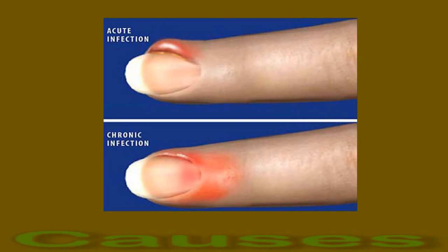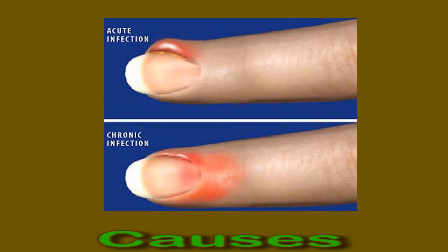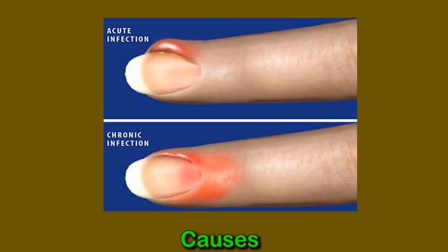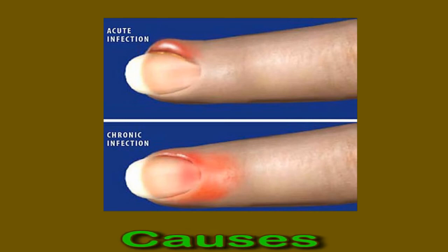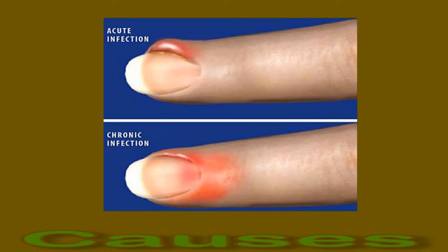The infection occurs when the skin around the nail becomes damaged, allowing germs to enter. Common bacterial culprits are Staphylococcus aureus and Streptococcus pyogenes. Common causes of skin damage around the nail include biting or chewing the nails, clipping the nails too short, manicures, excessive exposure of the hands to moisture including frequently sucking the finger, and ingrown nails.